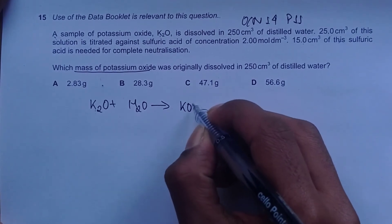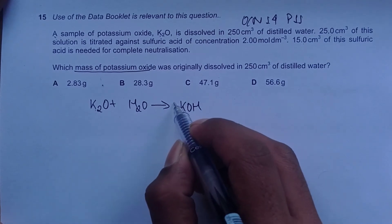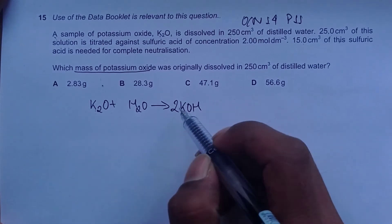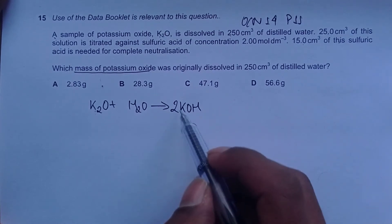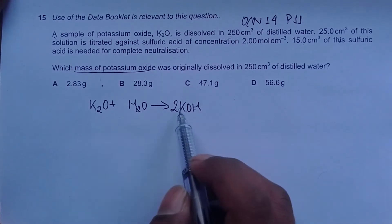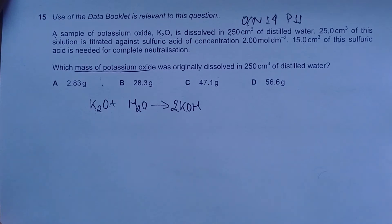Balancing this equation: we have two potassium here, so two here. Adding two here balances everything - two hydrogen, two hydrogen, and two oxygen. This is the first part of our equation.